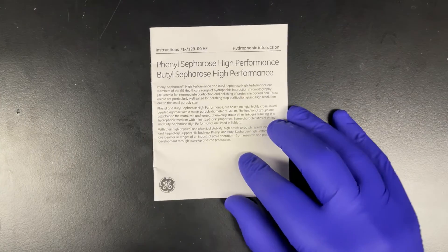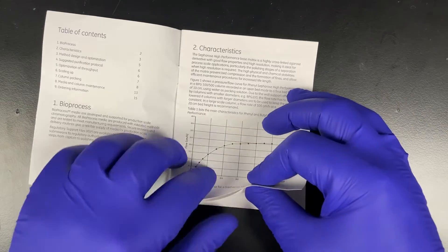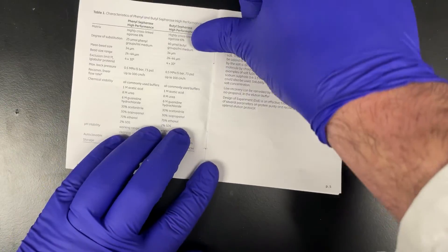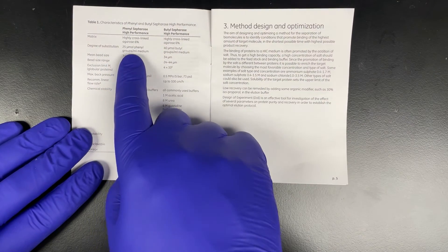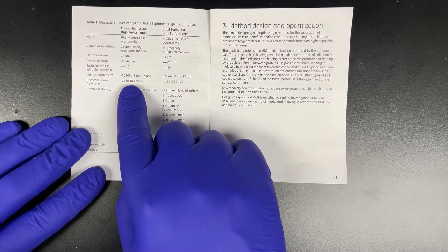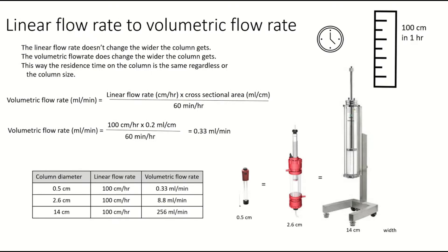One of the things we haven't done so far is to figure out what flow rate we're gonna run the new column at. So we'll look in the instruction booklet and we will find a recommended flow rate that's a linear flow rate, which is in centimeters per hour. For the new column we're gonna have to calculate what the flow rate is in mils per minute. So now that we know what the recommended flow rate is, which is a linear flow rate, we have to convert that to a volumetric flow rate in mils per minute. We're going to do that by multiplying 100 centimeters an hour by the cross-sectional area, which is 0.2 mils per centimeter. We calculated that earlier. Then we're gonna divide that by the number of minutes in an hour, 60, and we're gonna end up with 0.33 mils per minute.